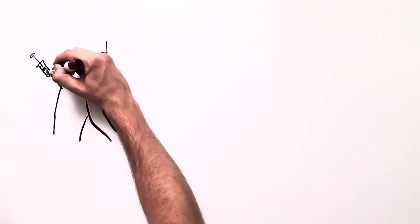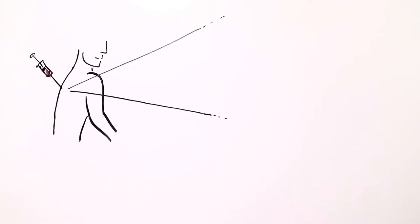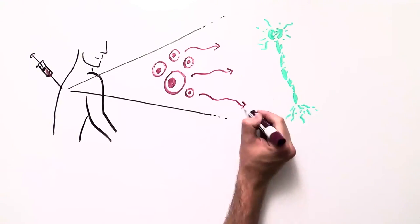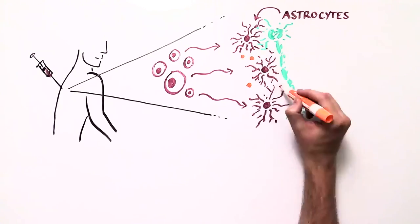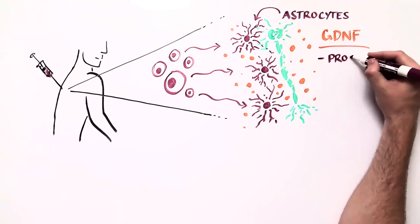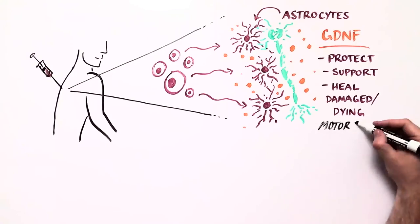Once implanted, the scientists think these modified cells would migrate to the site of injury where they would turn into astrocytes and produce high amounts of GDNF to protect, support, and maybe even heal the damaged and dying motor neurons.